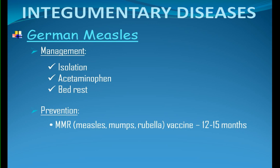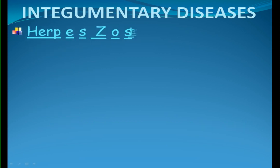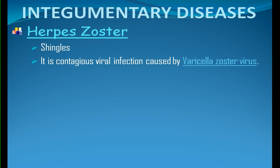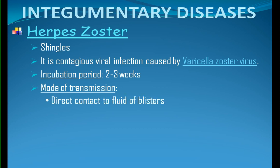Herpes zoster. It is also called shingles. It is a contagious viral infection caused by the varicella zoster virus that primarily starts as chickenpox. The virus then reactivates from its latent state, causing inflammation of the posterior dorsal root ganglion. The incubation period is 2 to 3 weeks, or usually 13 to 17 days. Mode of transmission: direct contact with fluid from blisters, airborne, and droplets.